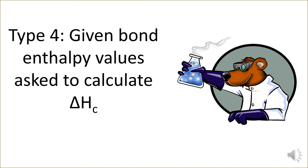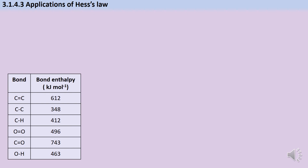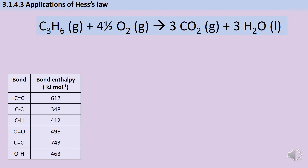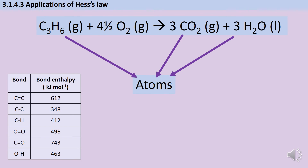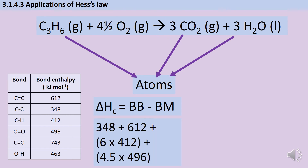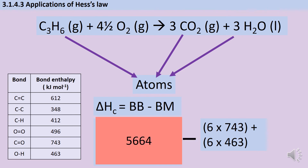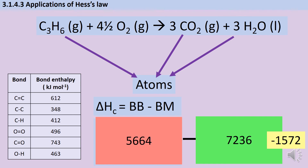Finally, there are two types of questions that use bond enthalpy data. For the first type, I'm given bond enthalpy data and asked to work out the overall value for the standard enthalpy of combustion of propene. This is really just a regular bond enthalpy question where I work out ΔH — the only twist is knowing what the standard enthalpy of combustion of propene means, so I can write the equation. The third point of the triangle is the atoms left after breaking every single bond. The overall ΔH equals bonds broken minus bonds made: adding up all bonds in reactants and all bonds in products gives a value of minus 1,572 kJ/mol.